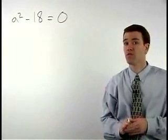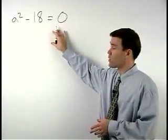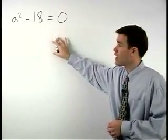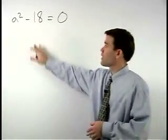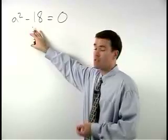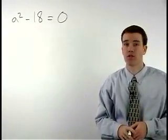In the past, we've solved quadratic equations by first setting the equation equal to 0, then factoring. Notice, however, that a squared minus 18 does not factor, so we must use a different strategy here.